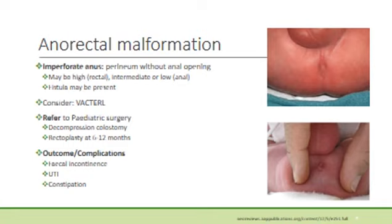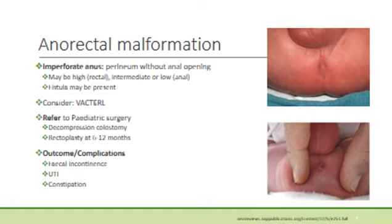Anorectal malformations can be classified into three groups: high, which occurs above the levator ani level; intermediate; or low, which is below the levator ani level. Imperforate anus is a perineum without an anal opening and can be high, intermediate, or low. A fistula may be present, such as recto-vaginal, recto-vestibular, or anocutaneous fistula, which can give temporary relief from obstruction. In any baby with imperforate anus, it is important to consider the VACTERL association. These patients should be referred to paediatric surgery for a decompression colostomy and then a definitive operation at 6 to 12 months. Expected complications include faecal incontinence, recurrent urinary tract infections, and constipation.